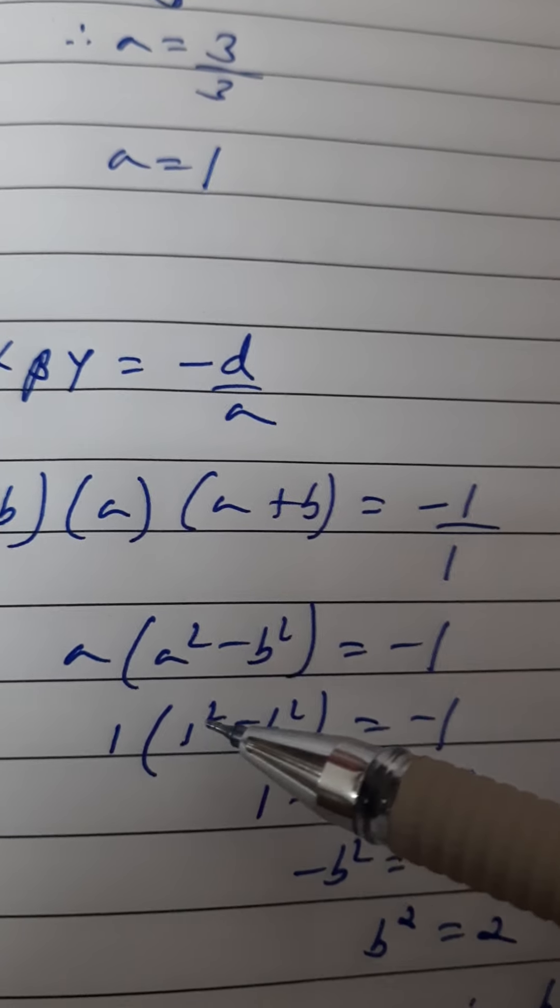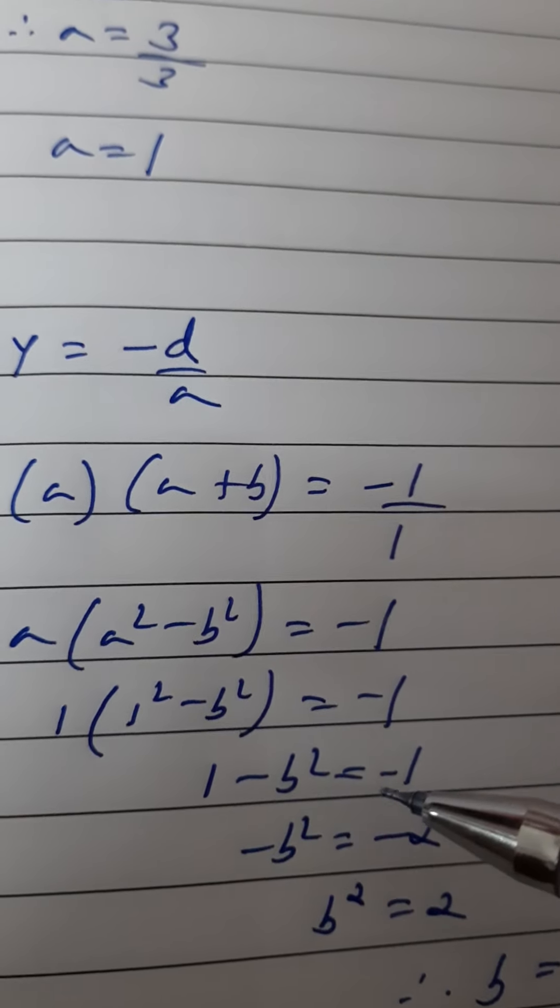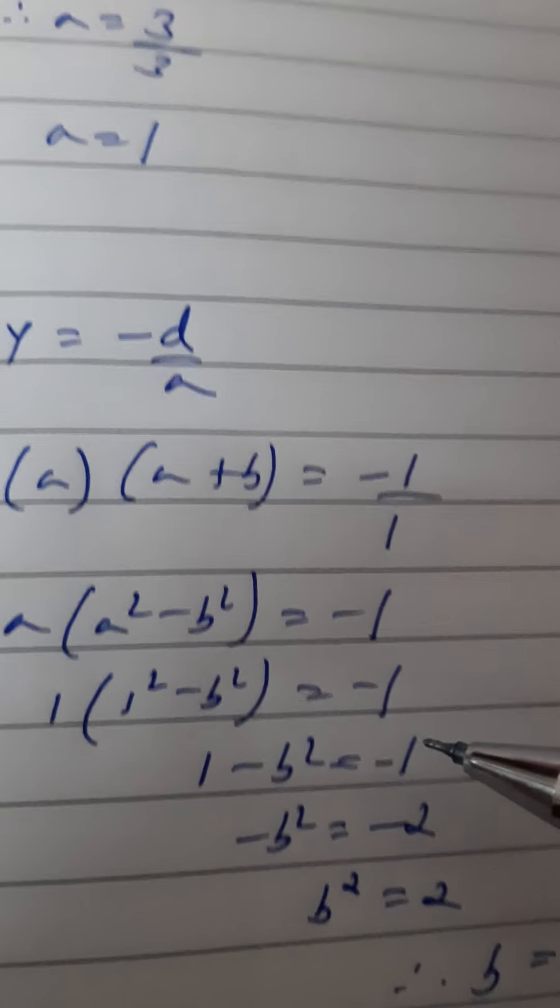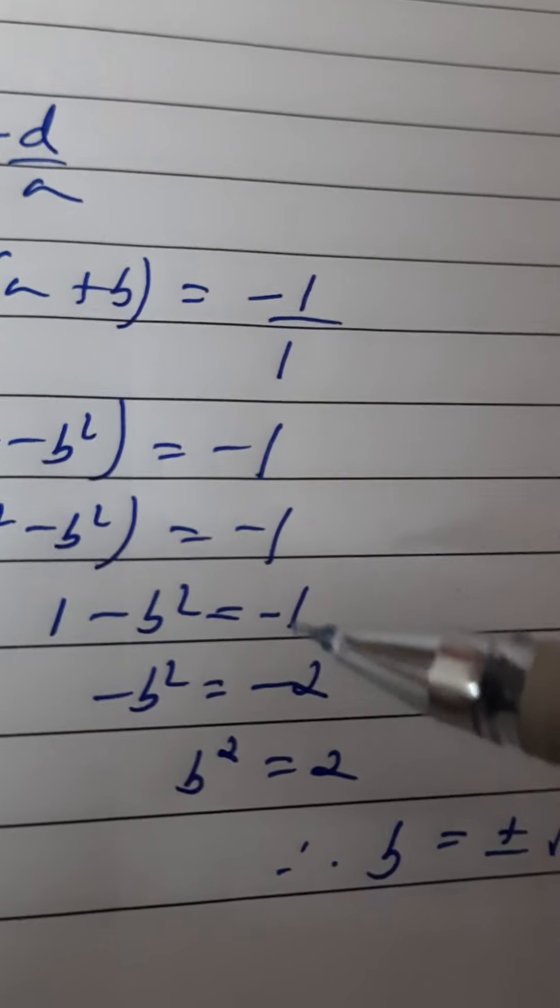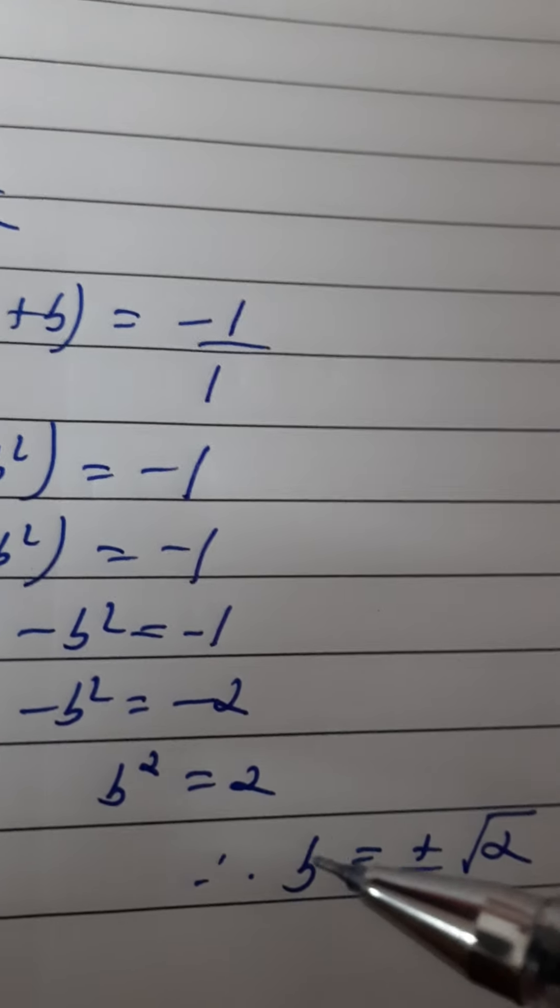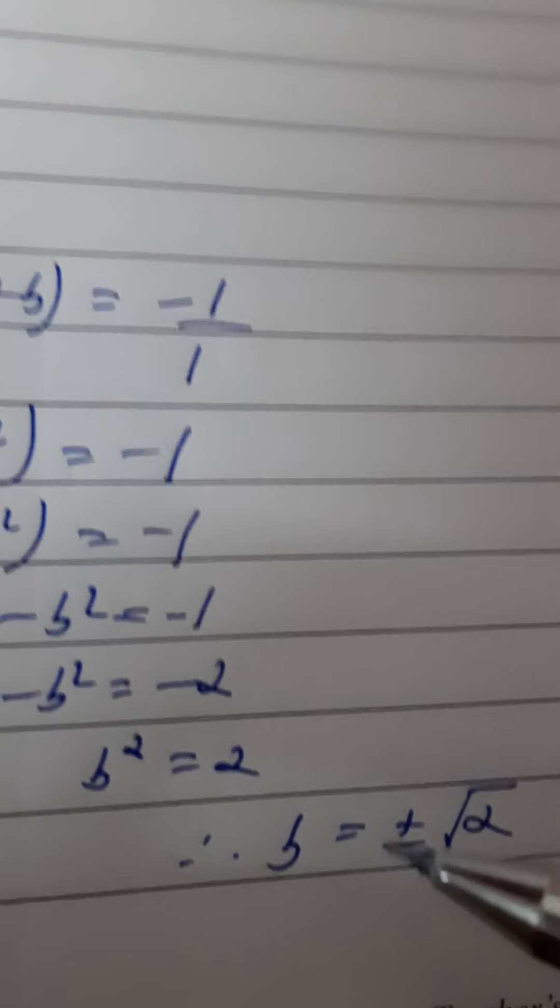So 1 - b² = -1. This 1 we can transfer this side, so we get -1 and -1 again. So -1 - 1, we get -2. The negatives cancel. b² is 2, so here we get the value of b as square root of 2, plus minus root 2.